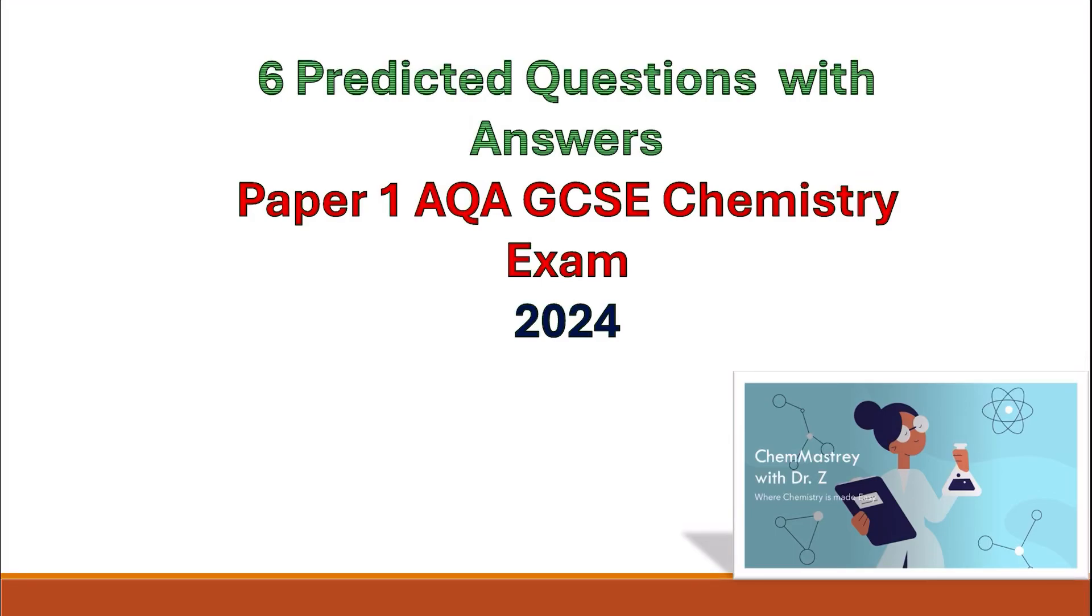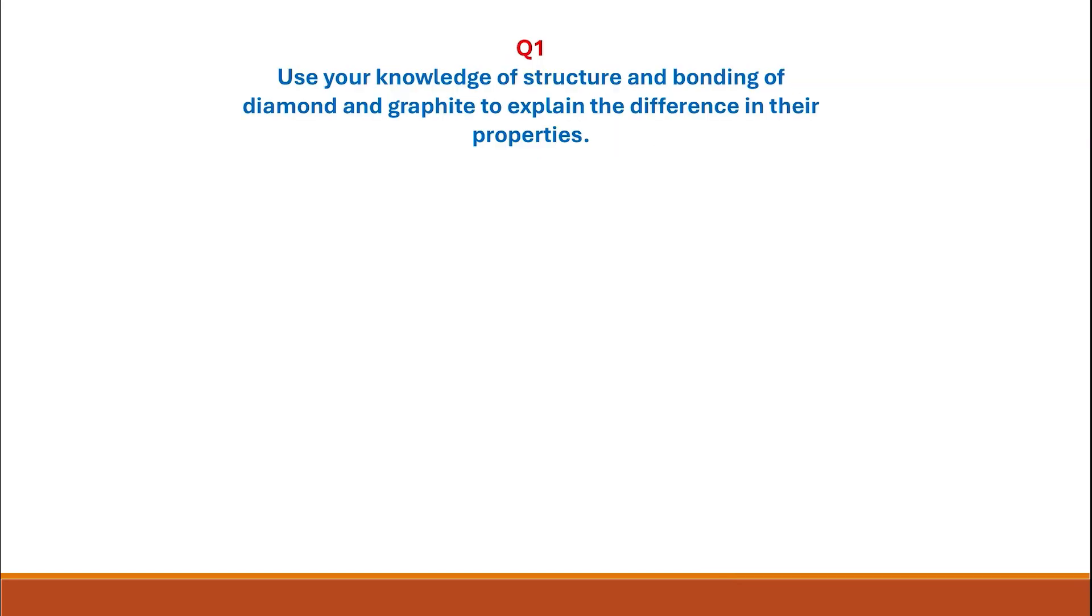Six predicted questions with answers for Paper 1 AQA GCSE Chemistry Exam 2024. Question 1: Use your knowledge of structure and bonding of diamond and graphite to explain the difference in their properties.